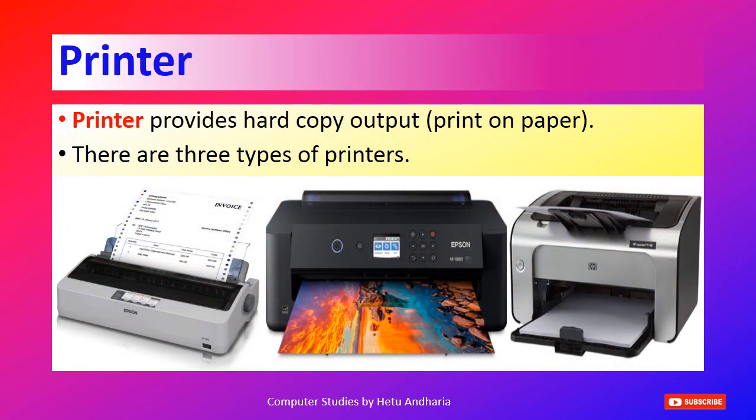The next output unit is the printer, which provides a hard copy — a print on paper. There are mainly three types of printers when it comes to printing technology on paper. You can see images of all three types on screen and I will explain each one.